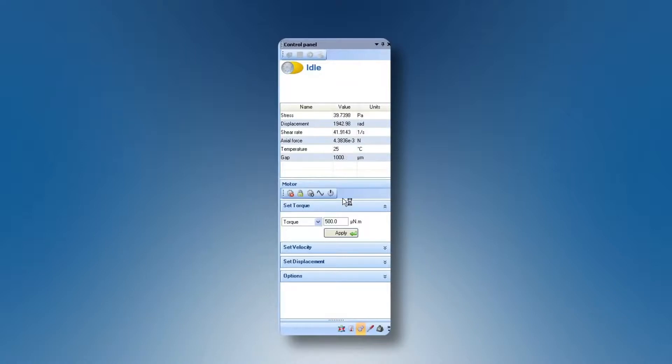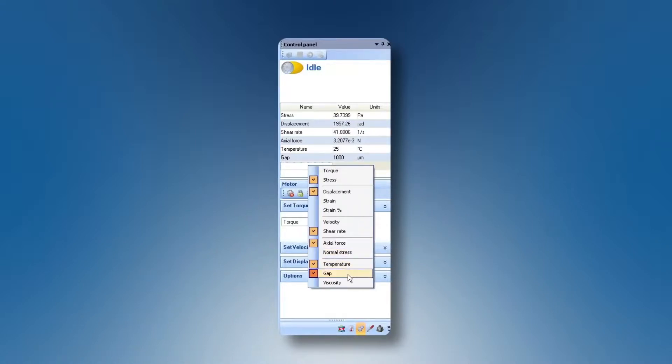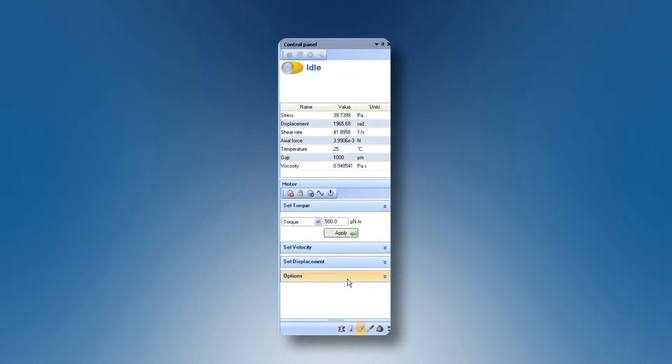The ratio of stress and shear rate is the viscosity, and we can choose to display the viscosity by activating it via a right click. And we see the value of 0.948 Pa seconds, which is about 950 mPa seconds.